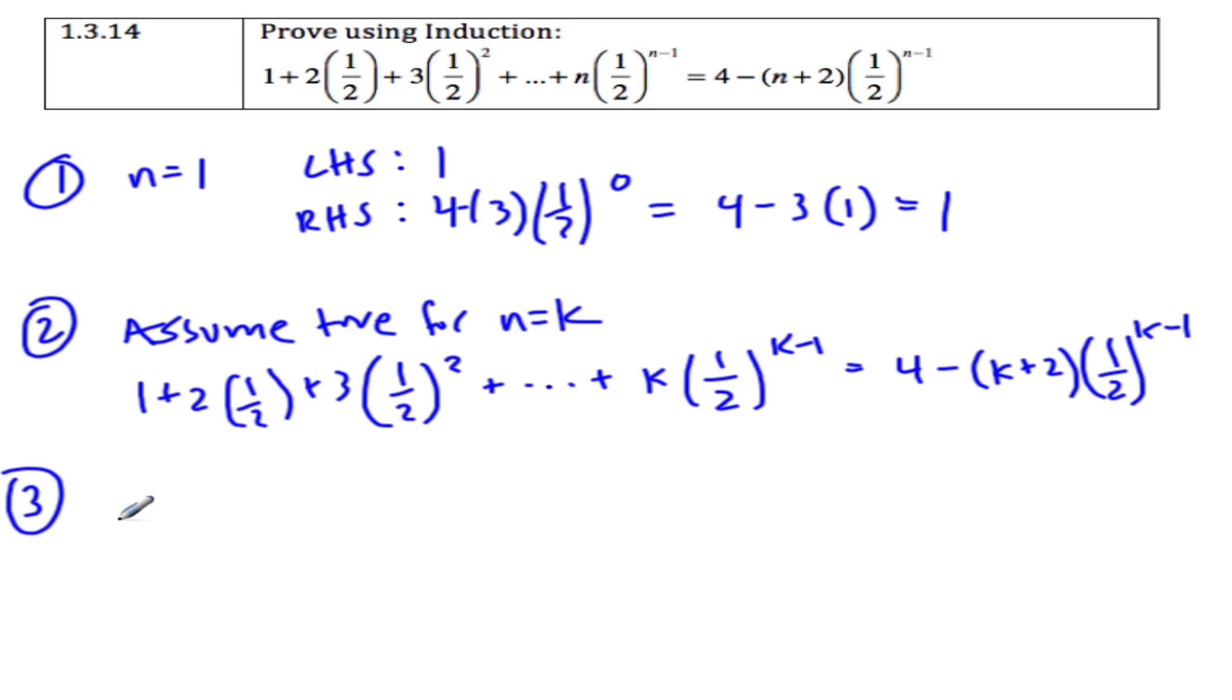Step number 3. Show true for n equals k plus 1. So that's saying 1 plus 2 times 1 half plus 3 times 1 half squared plus all the way out to k, 1 half, k minus 1, plus the k plus 1th term,